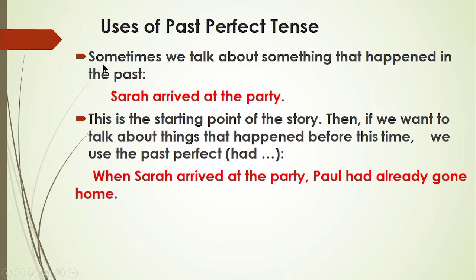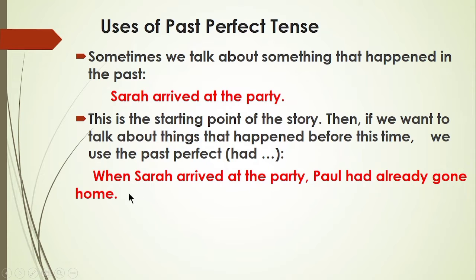Uses of past perfect tense. Sometimes we talk about something that happened in the past. When something happens in the far past we normally express it in past perfect tense, or sometimes in past simple tense. For example, 'Sarah arrived at the party' is simple past — that is the starting point of the story. Then for things that happened before this time we use past perfect: 'had' plus the third form. Like: 'When Sarah arrived at the party, Paul had already gone home.' The going of Paul happened before the arrival of Sarah, so that action is expressed in past perfect tense.